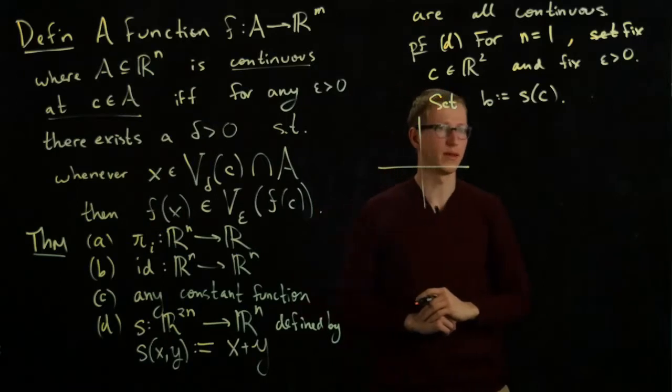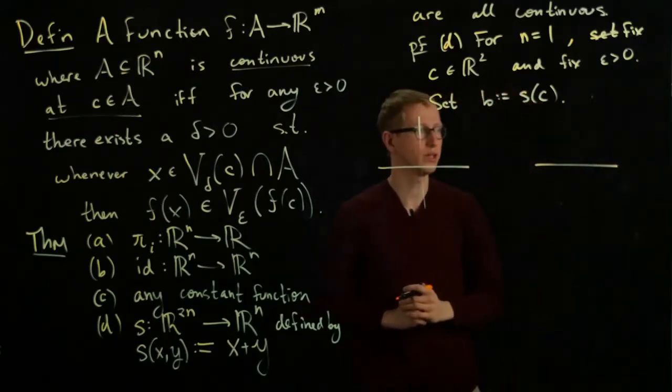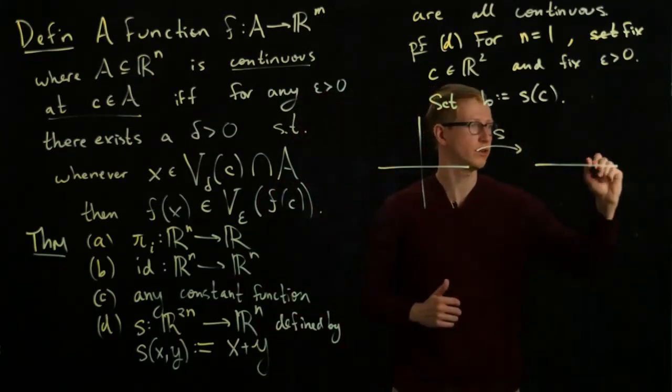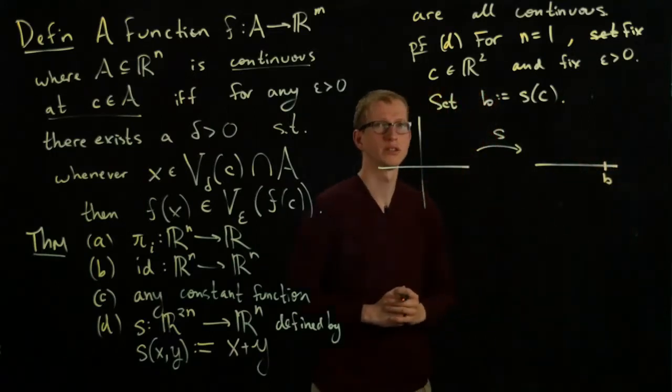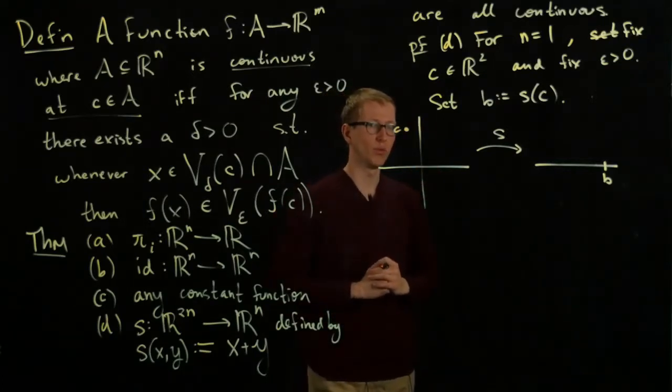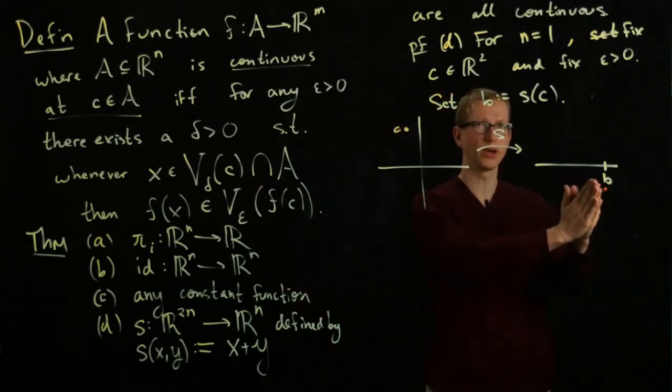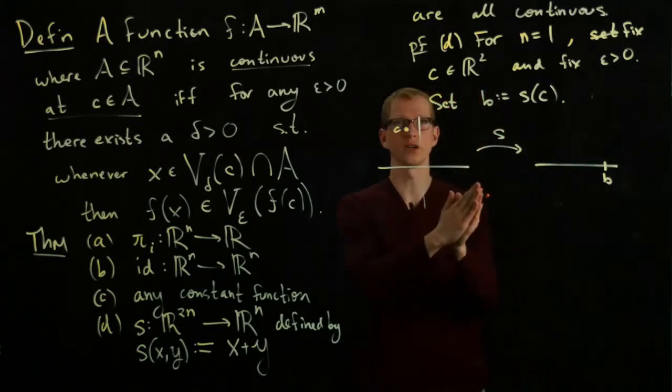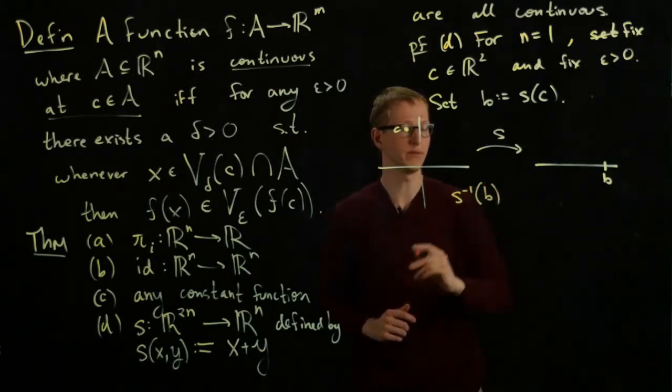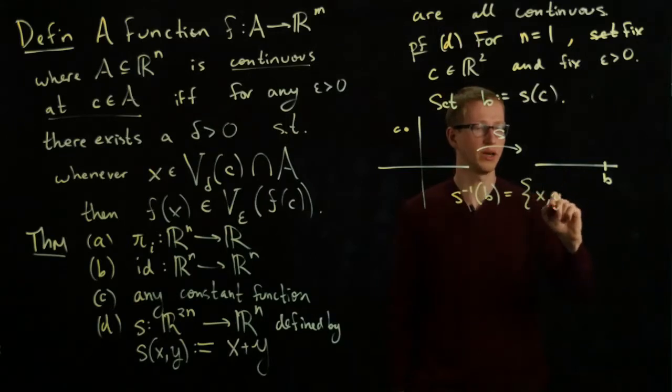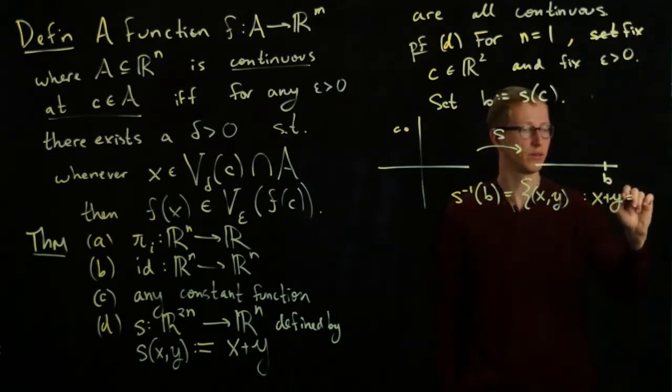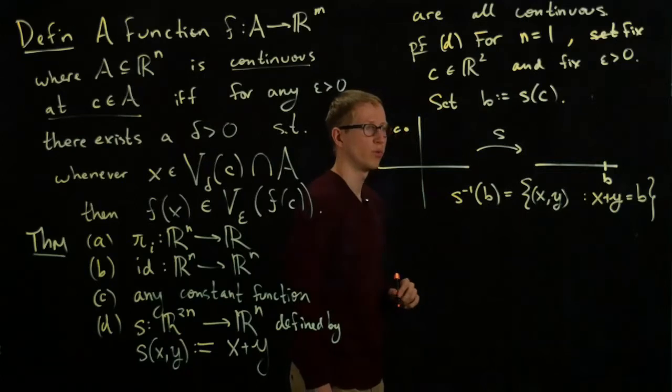So let's actually look at the domain and co-domain of this function. Here's a little picture of R^2 and here's a little picture of part of R, and we have this function S. Here's an element B in the image of this function. Let's just suppose arbitrarily that C is over here. Now what we can do is we can also look at the set of all the points that get mapped to B as well under this function S. So let's look at the inverse image of the element B, and the inverse image is a set of all (x, y) such that x plus y equals b.